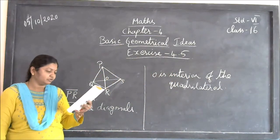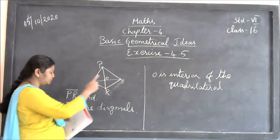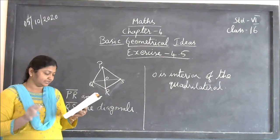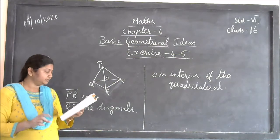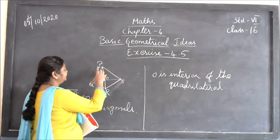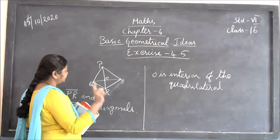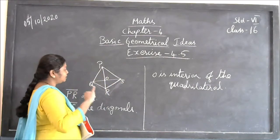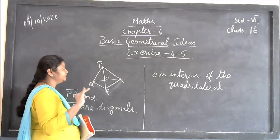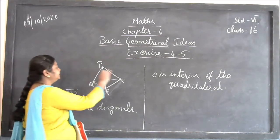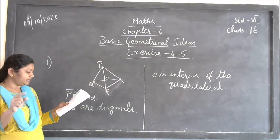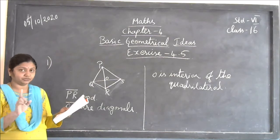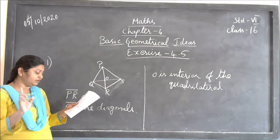The second sum is for the quadrilateral ALMN. You have to draw it the same way. You have to identify two pairs of opposite sides, two pairs of opposite angles, and two pairs of adjacent sides and two pairs of adjacent angles. For example, RS and QP are one pair of opposite sides; QR and SP are another pair of opposite sides.